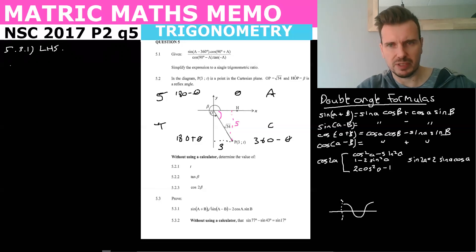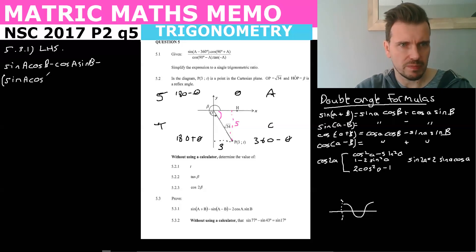So 5.3.1, they want us to prove. And usually when we're proving, we take the left hand side and prove it. So you say LHS and sin A plus B. What I'm going to do is this looks very much like we need to use our double angle formulas. So we're just going to sub them straight in. So A plus B is sin A cos B plus cos A sin B. And then we minus the other one.